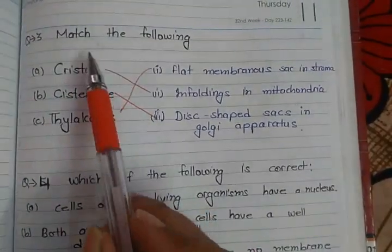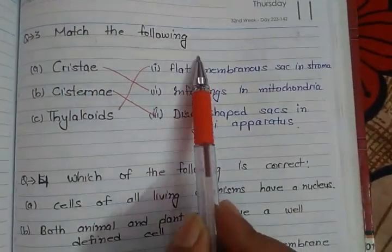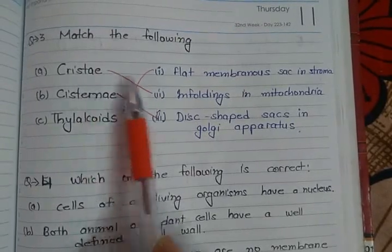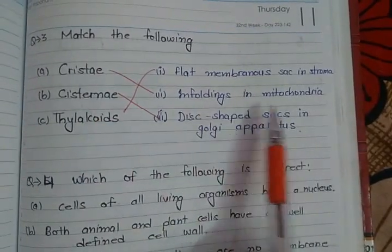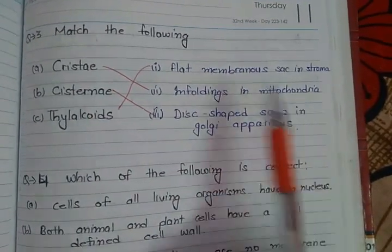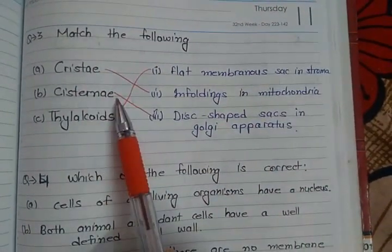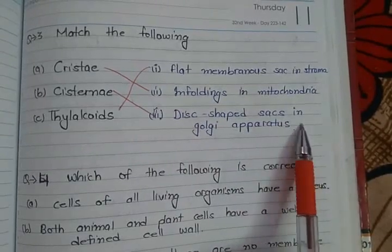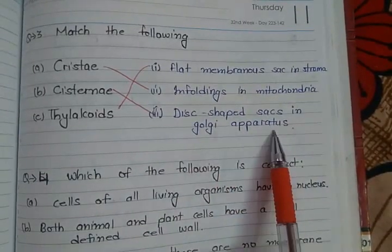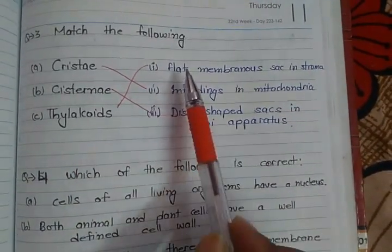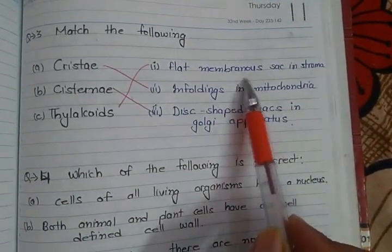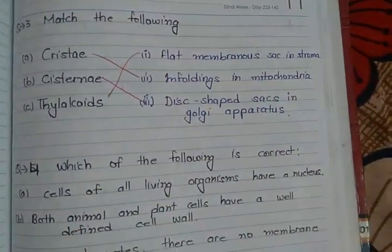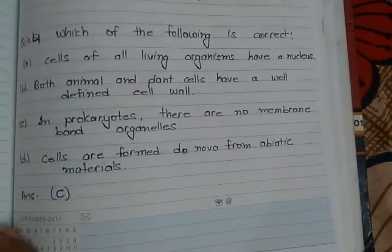Question 3 is match the following. Cristae is the infolding in mitochondria. Cisternae is the disc-shaped sacs in Golgi apparatus, while thylakoid are flat membranous sacs in stroma.